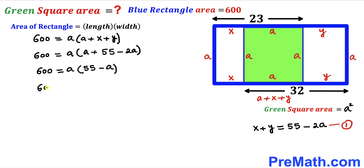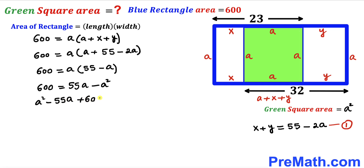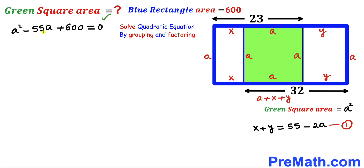Distributing, we get 600 = 55a − a². Moving all terms to one side gives us the quadratic equation: a² − 55a + 600 = 0.